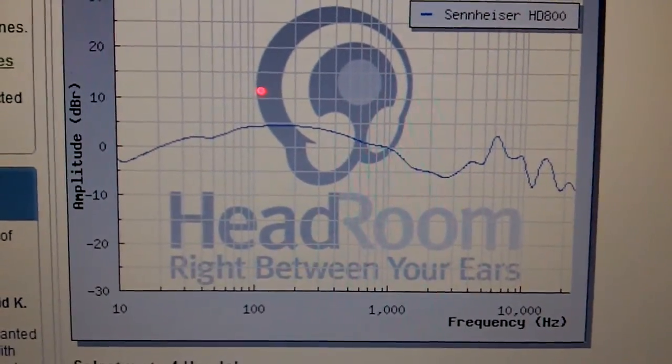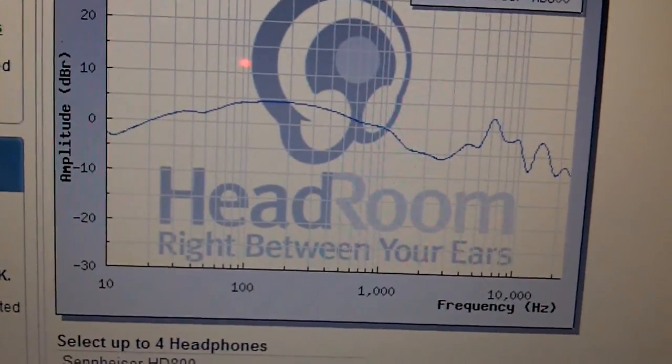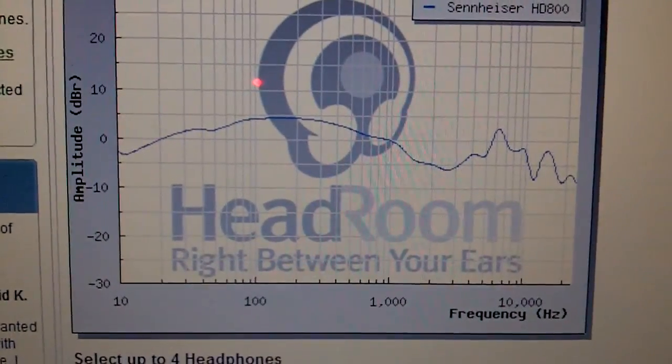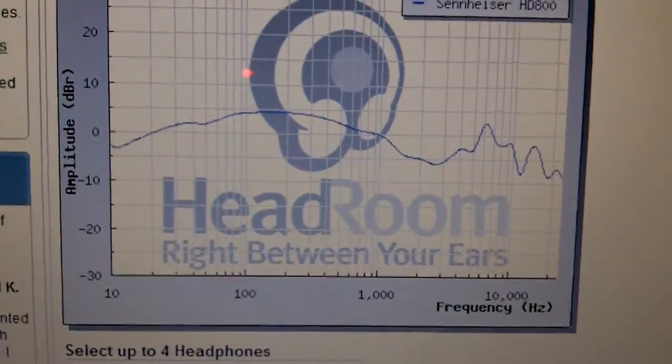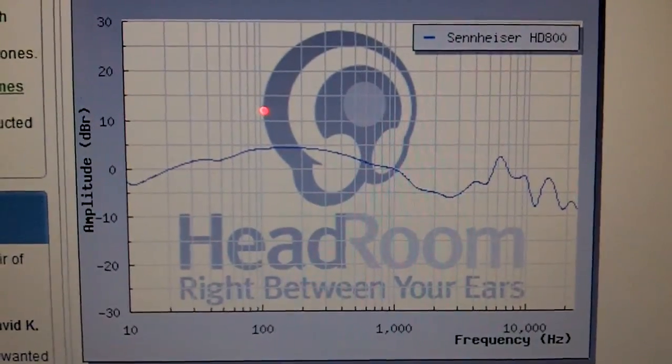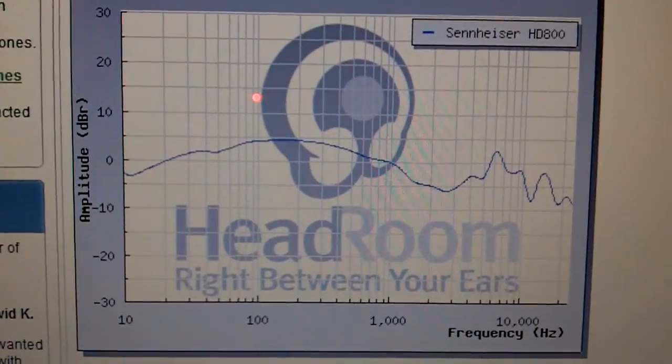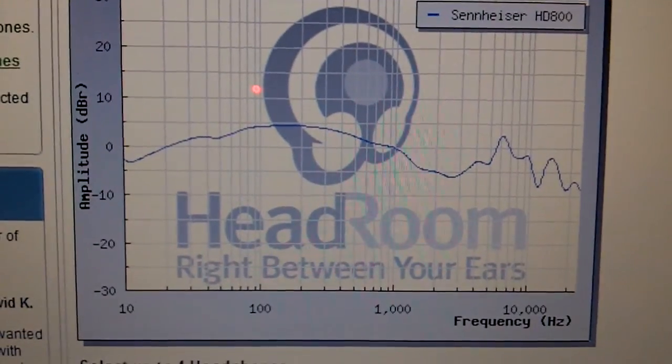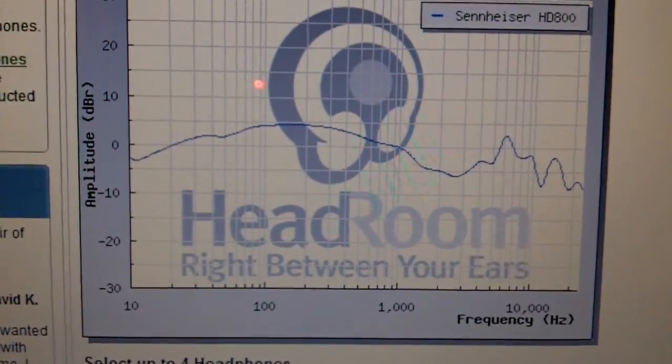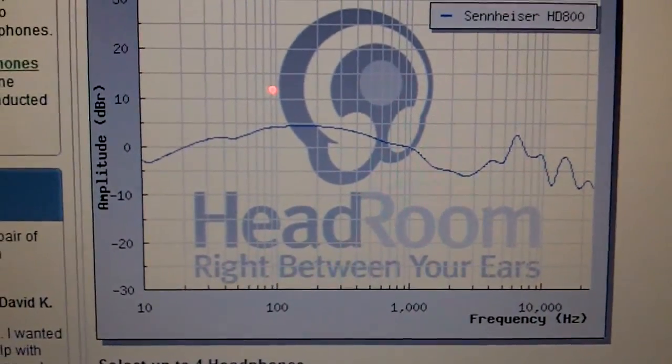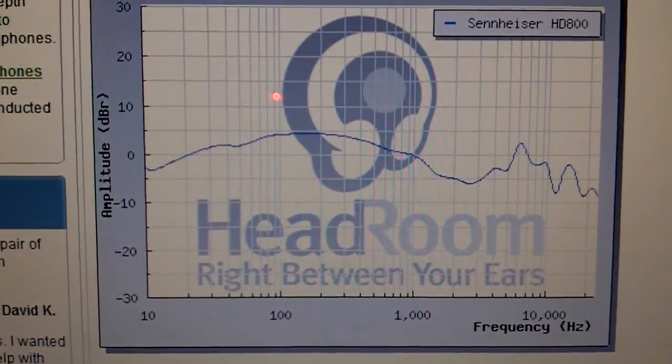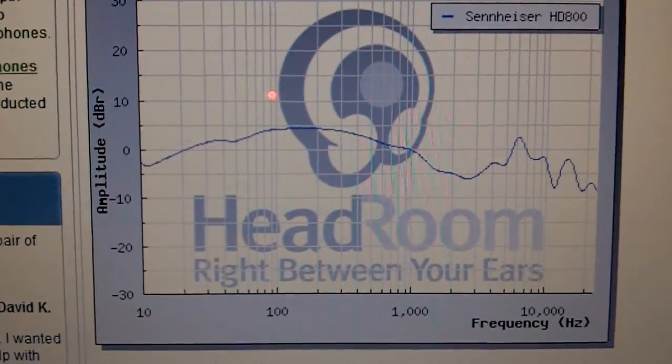But it won't give you the complete sense. A frequency response graph will not be able to tell you the detail capabilities of the headphone, the sound stage. Basically it won't tell you the sound quality of the headphone. It will just tell you at what given frequency, what's the volume intensity of that frequency for what given frequency.